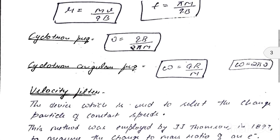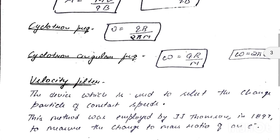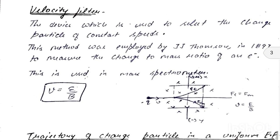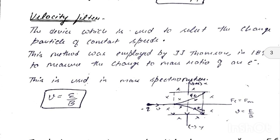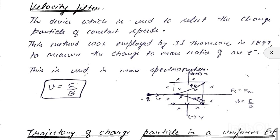Direct questions from this topic include: what is cyclotron, its principle and working. Next topic is velocity filter. The device which is used to select charge particles of constant speed is known as a velocity filter. This method was employed by J.J. Thomson in 1897 to measure the charge-to-mass ratio of an electron, and is also used in mass spectrometers.